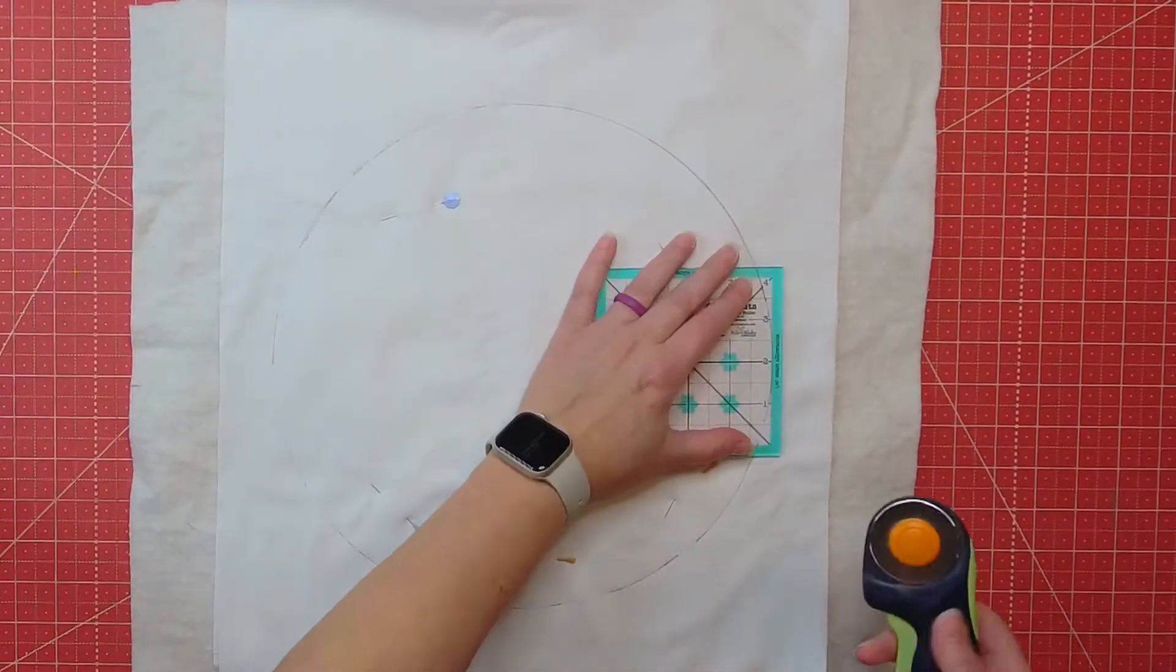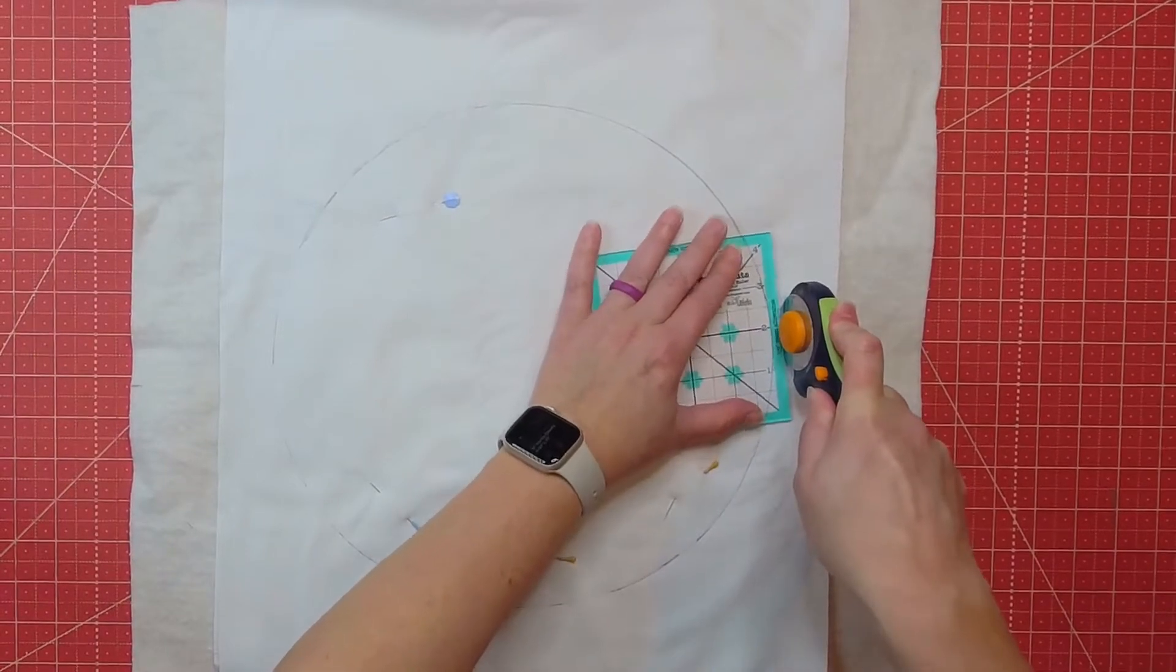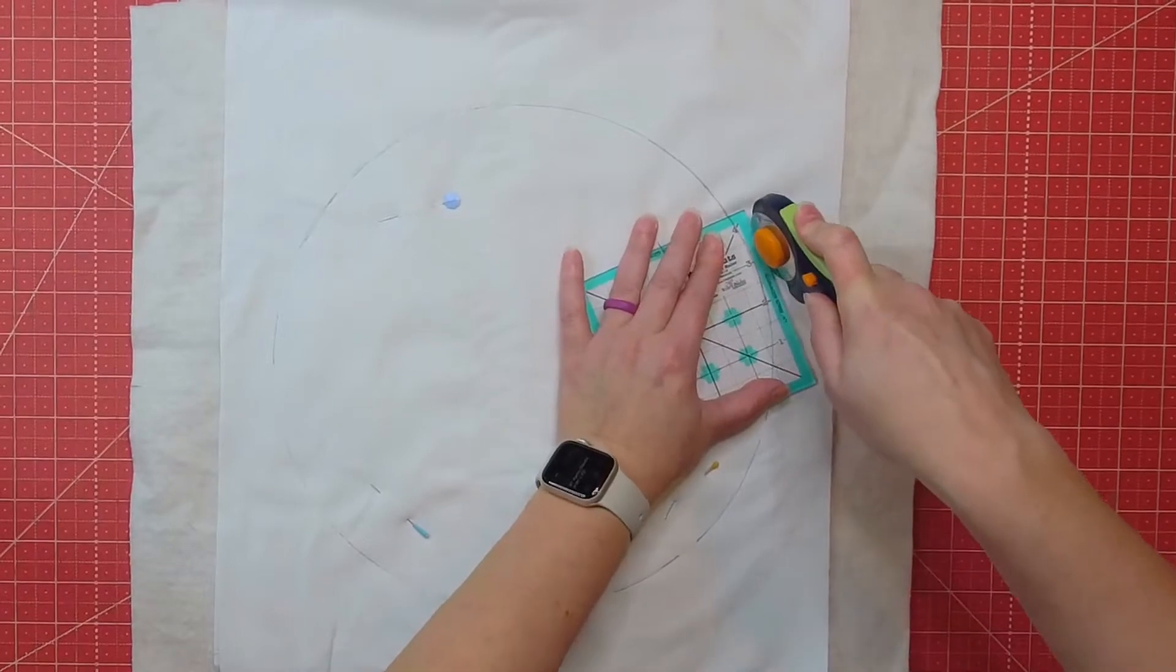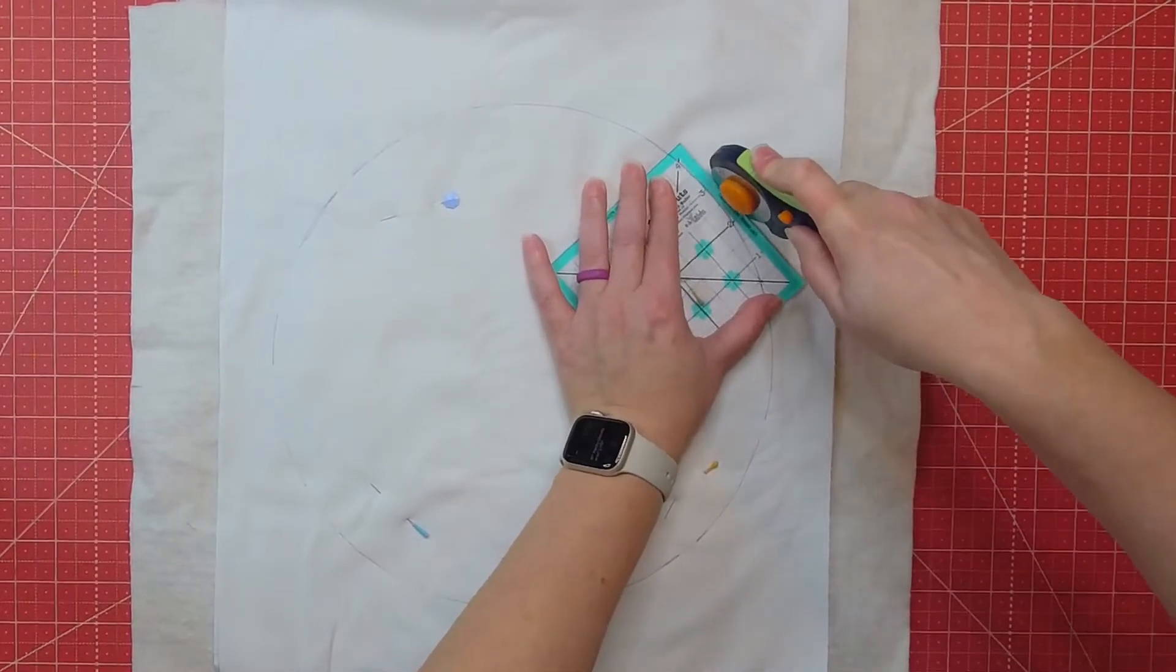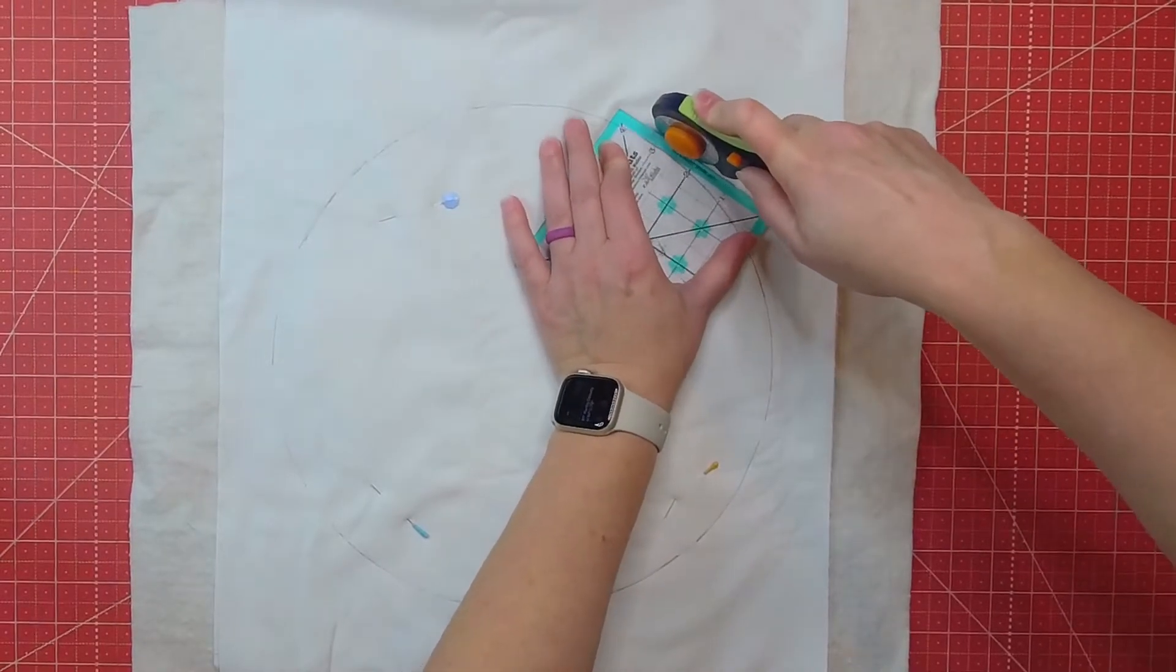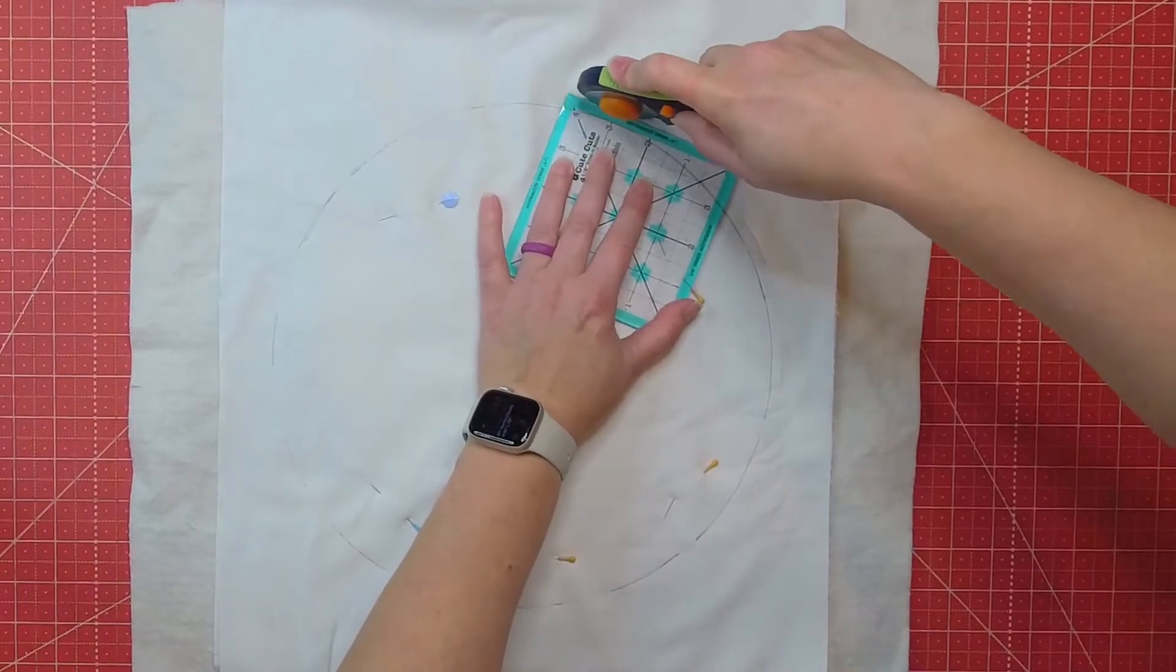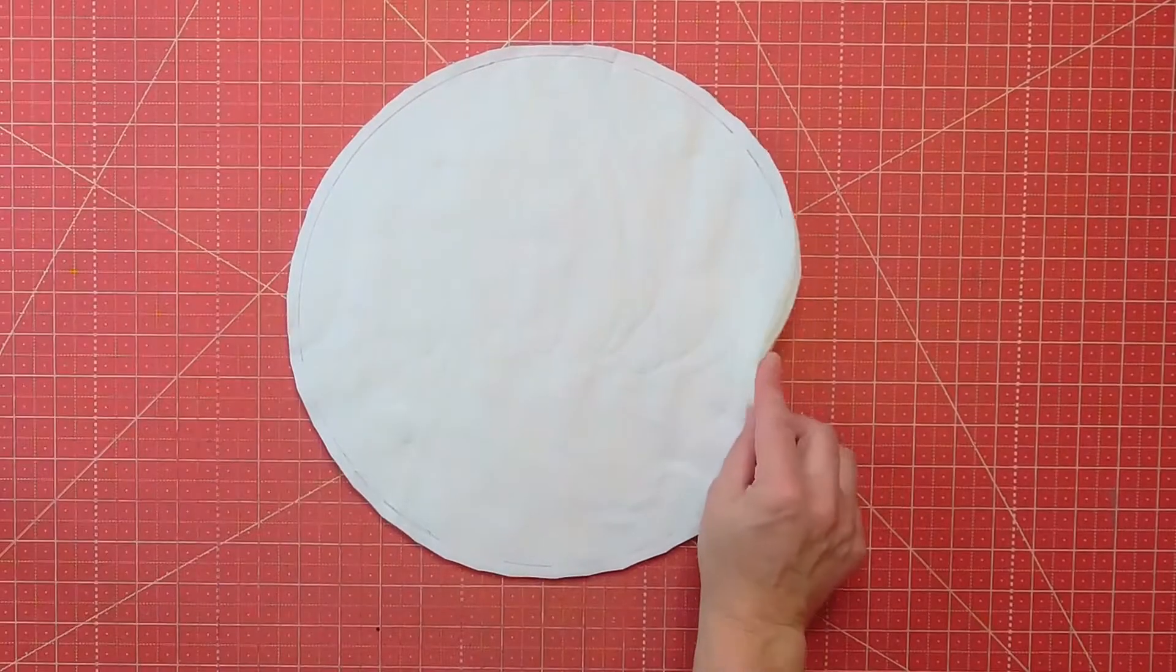So I'm using this quarter inch ruler because I'm going to actually cut a quarter of an inch outside of this drawn line so that I can get the exact size that I was hoping for on this pillow. And I'm just going to slowly use my rotary cutter to go around the circle. It's a little bit easier for me to do this than scissors, but you can just go ahead and use scissors if you would like to. And if you don't mind that your pillow is a little bit smaller, just cut on the line.